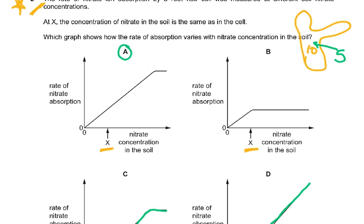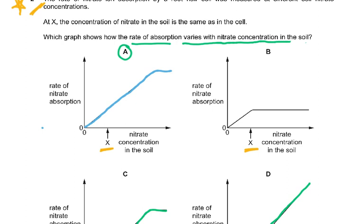Active transport still takes place even when the outside concentration is less than X. If it's 9 outside and 10 inside, ions are still taken in by active transport. So the correct graph starts at zero and increases, then levels out. It levels out because the root hair cell has a finite number of channel proteins, which become the limiting factor for active transport.